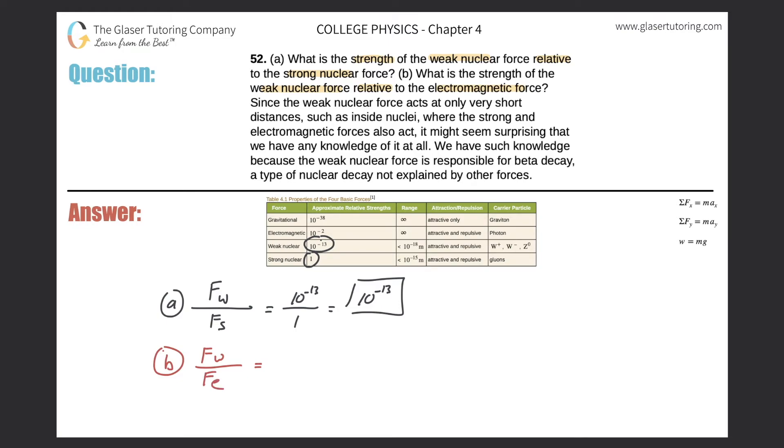So the weak nuclear force, again, it's 10 to the minus 13. And then the electromagnetic is 10 to the minus 2. So when we do the division here, it comes out to be 10 to the minus 11. To 1, basically.